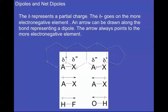A dipole is a difference in polarity brought about by a difference in electronegativity between two elements. We're looking at a delta plus and a delta minus — these are partial charges, where the delta minus goes on the more electronegative element and the delta plus goes on the less electronegative element. Polarity represents the pull of electrons, since electrons are more attracted to the electronegative element.